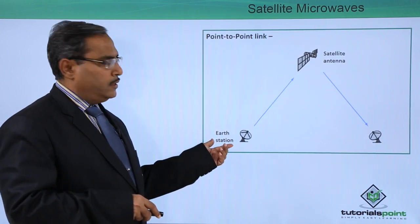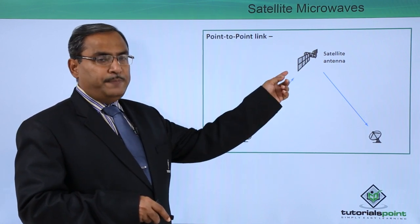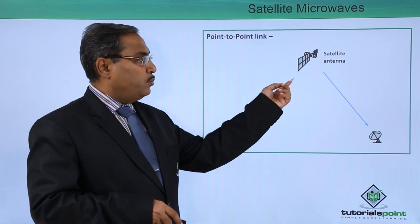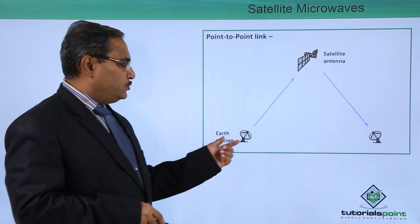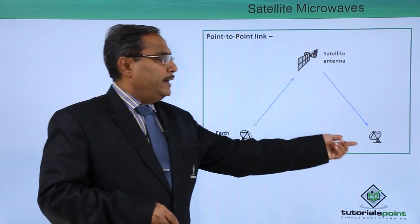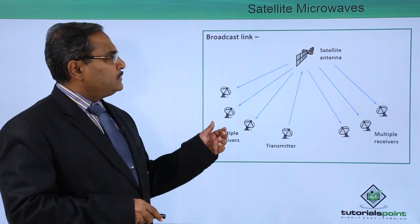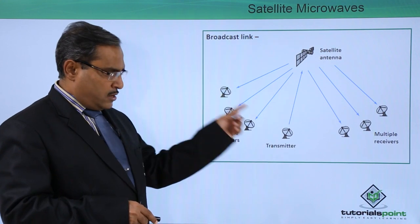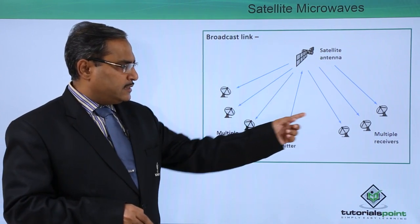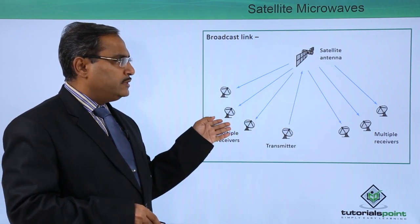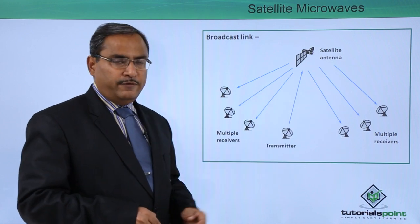In a point-to-point link, one ART station communicates with another ART station via the satellite using the uplink frequency, and the satellite relays it back on the downlink frequency. In the case of a broadcast link, there is one transmitter and multiple receivers. The transmitted information is broadcasted to multiple receivers through the satellite, with one uplink frequency and one downlink frequency serving all the ART stations.